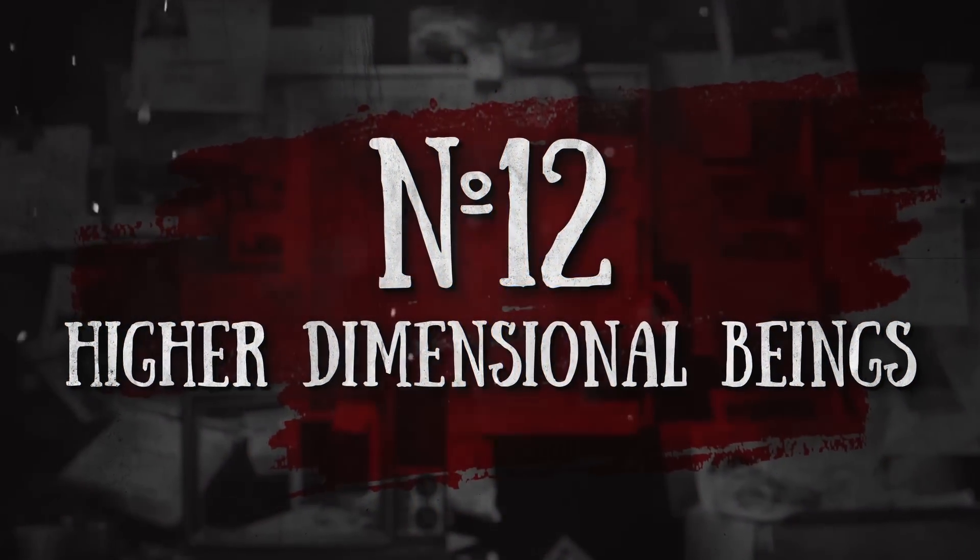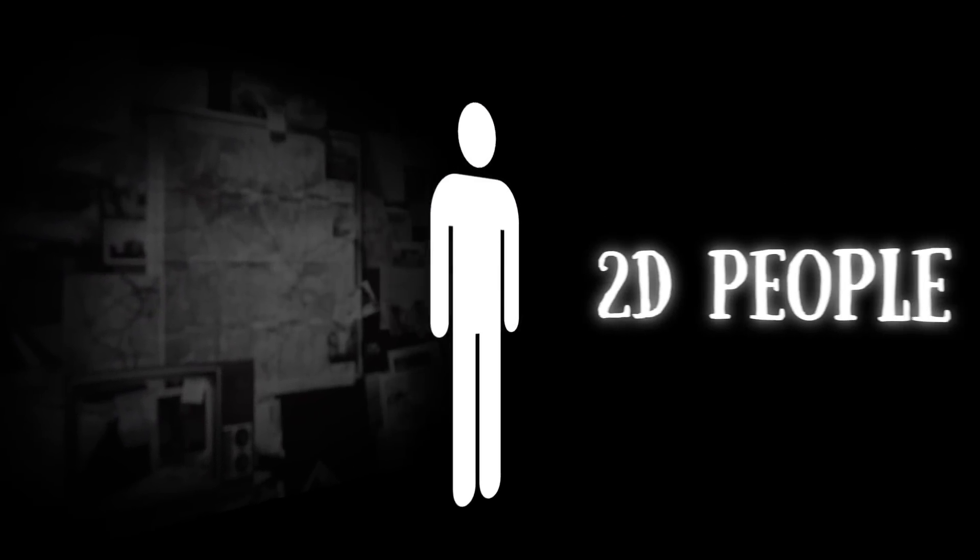Number 12: Higher Dimensional Beings. Let's imagine something pretty bizarre now: 2D people. Obviously, if you stared at them from a certain angle, like from the top, they wouldn't ever spot you. They'd live peacefully in their two-dimensional lives without any suspicion that someone's watching them from above.